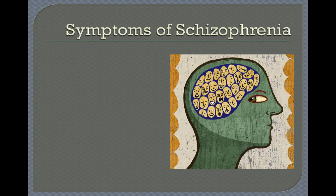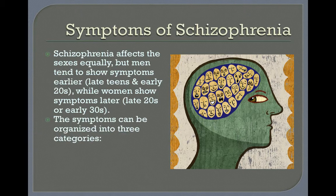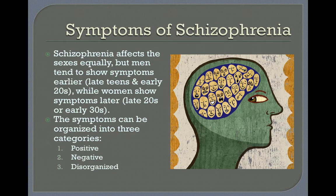Schizophrenia affects the sexes equally, but men tend to show symptoms earlier, in their late teens and early twenties, while women show symptoms later, in their late twenties or early thirties. Symptoms can be organized into three categories: positive, negative, and disorganized.